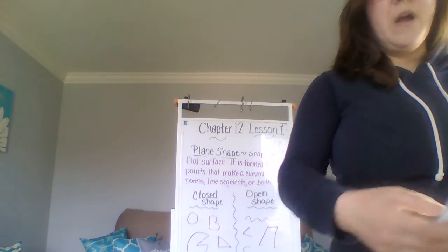Now we're going to play a quick game of Simon Says. If I say 'Simon says show point,' you do the fist gesture. Simon says show ray — Simon says show line — Simon says show line segment — Simon says show point. Are you ready? Let's get started.